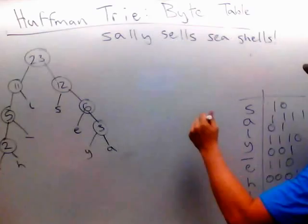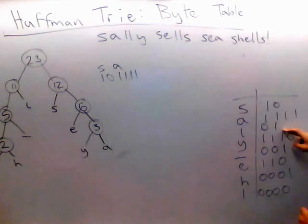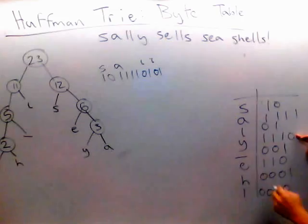So how we're going to encode the string is literally S is mapped to these two bits. So we want to represent S, we're going to write 1, 0. A is 1, 1. L is 0, 1.